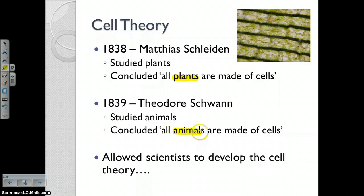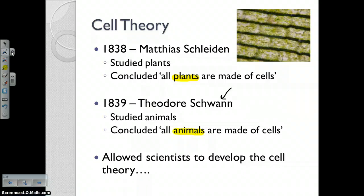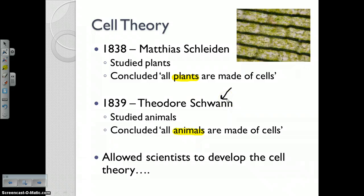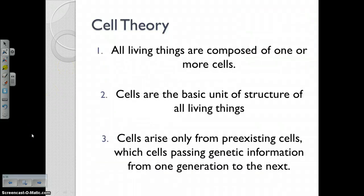The way I always remember what these two scientists did is: Schwann sounds like swan, which is an animal. So Schwann studied animals, and Schleiden studied plants. They were actually friends, and basically over tea one day they were discussing their work and realized: you study plants and they're all made of cells, I study animals and they're all made of cells. So together their work really allowed us to develop the cell theory, which says: all living things are composed of one or more cells; cells are the basic unit of structure of all living things; and cells come from pre-existing cells, which pass on genetic information from one generation to the next.